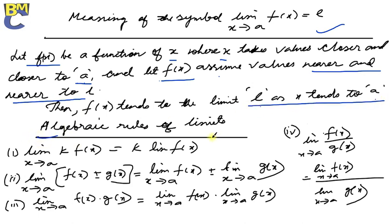Now let us see the algebraic rules for limits. If there is any constant before a function, take it out. The limit of a sum or difference equals the sum or difference of the limits: limit f(x) plus or minus limit g(x). When there is multiplication between two functions, find the limits separately: limit f(x) times limit g(x). For division: limit f(x) divided by limit g(x).